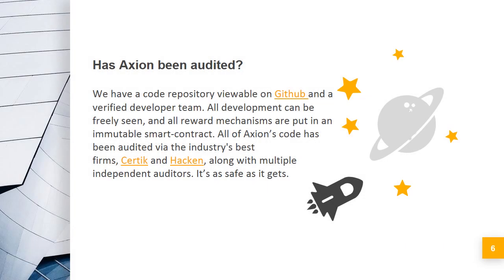Has Axion been audited? We have a code repository viewable on GitHub and a verified developer team. All development can be freely seen, and all reward mechanisms are put in an immutable smart contract. All of AXN's code has been audited via the industry's best firms — Certique and Hackett — along with multiple independent auditors. It's as safe as it gets.